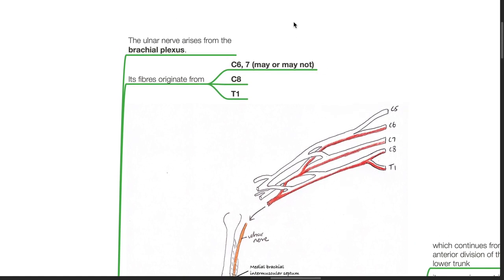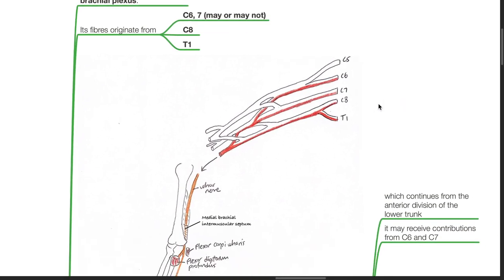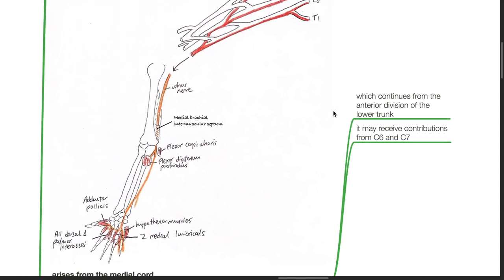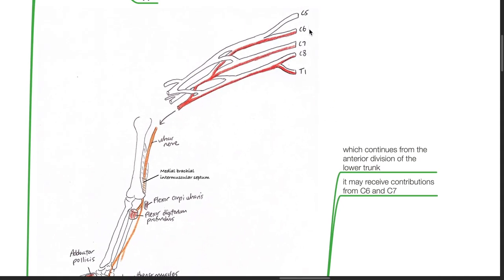The ulnar nerve arises from the brachial plexus. Its fibers originate from C6, C7, C8, and T1. It arises from the medial cord, which continues from the anterior division of the lower trunk and may receive contributions from C6 and C7.